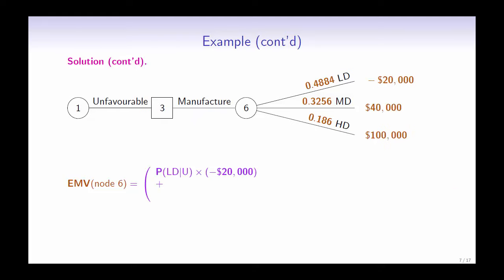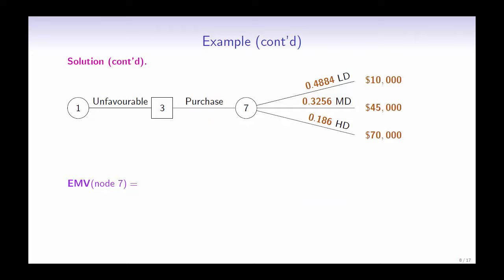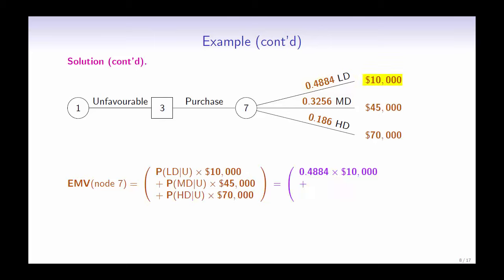The expected payoff at node 6 is equal to 0.4884 times negative 20,000 plus 0.3256 times 40,000 plus 0.186 times 100,000. This gives us an expected payoff of $21,856. And lastly, the expected payoff at node 7 is equal to 0.4884 times 10,000 plus 0.3256 times 45,000 plus 0.186 times 70,000. This gives us an expected payoff of $32,556.